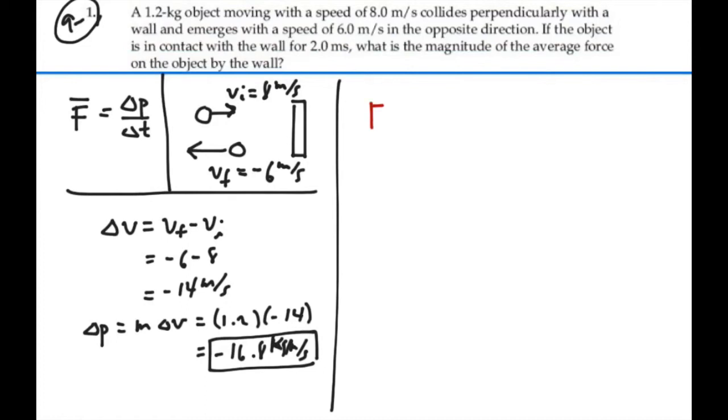That means that our force is our change in momentum over our change in time, or at least our average force. And that's going to be negative 16.8 kilograms meters per second over 2 milliseconds, 2 times 10 to the minus 3, and that gives us negative 8,400 newtons.